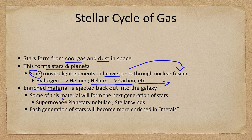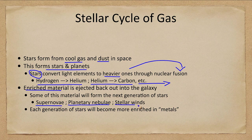Some of this material will help form the next generation of stars. Supernova explosions are one way to get this material out, but less massive stars form planetary nebulae which also expel material out into space, and stellar winds will push material out into space as well.